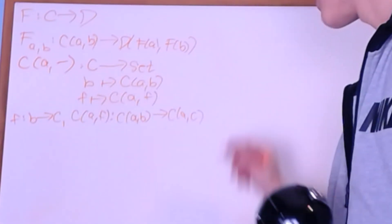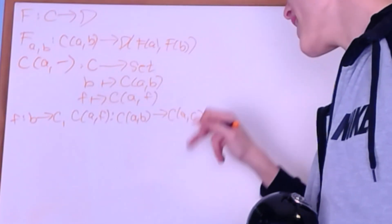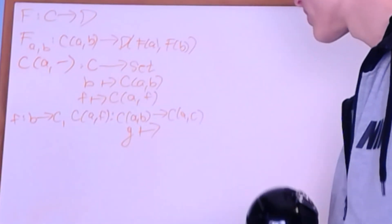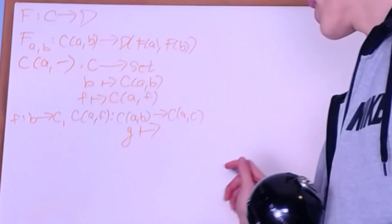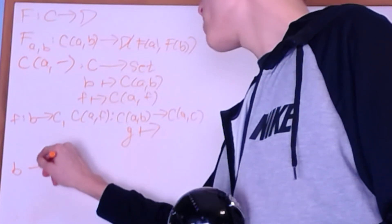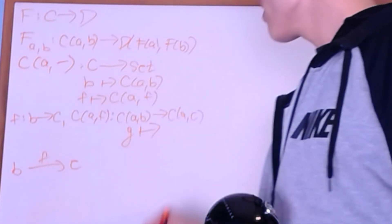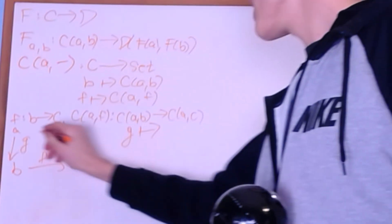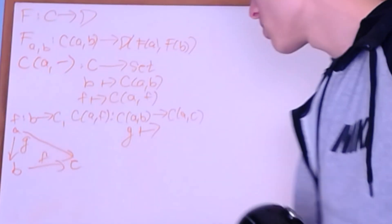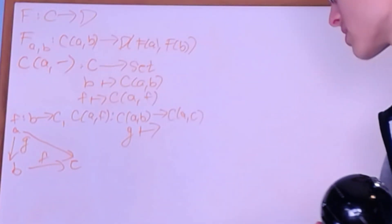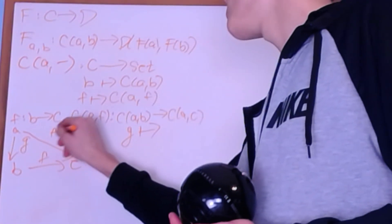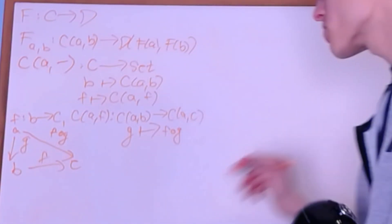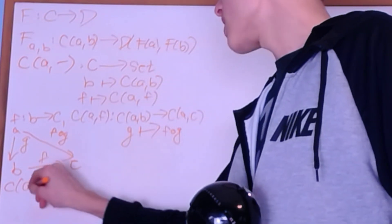What it'll do is send some arrow from A to B — call it g — and let's write out what we have: from B to C we have f, and from A to B we have g, and we want to create an arrow from A to C. Well, it's pretty obvious what we have to do: we compose them. So we do f composed with g. Now let's look at the composition law for this Hom functor.